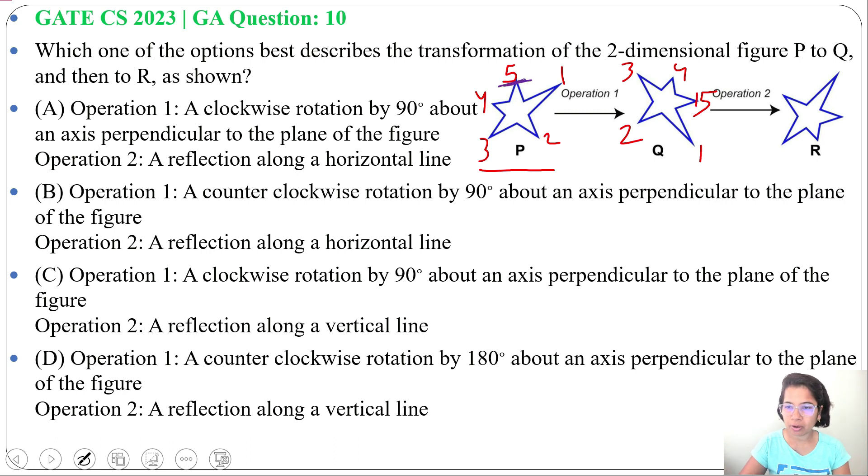Now just see what is the changes. Before 5 was at top, now 5 is at right side. Before 1 was here, now 1 is here. So if we make it like this, then it's a 90-degree rotation and it's clockwise. We did clockwise 90-degree rotation.